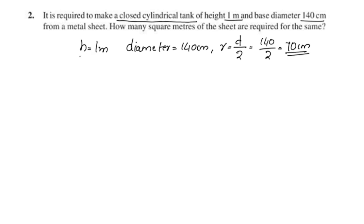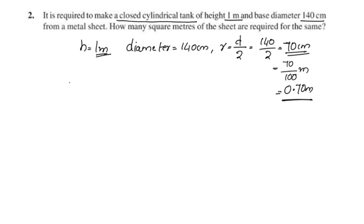The height is in meters but the radius is in centimeters, so we need to convert. Since 1 meter equals 100 cm, the radius is 70 by 100 meters, that is 0.70 meters. The metal sheet required equals the total surface area of the cylinder.